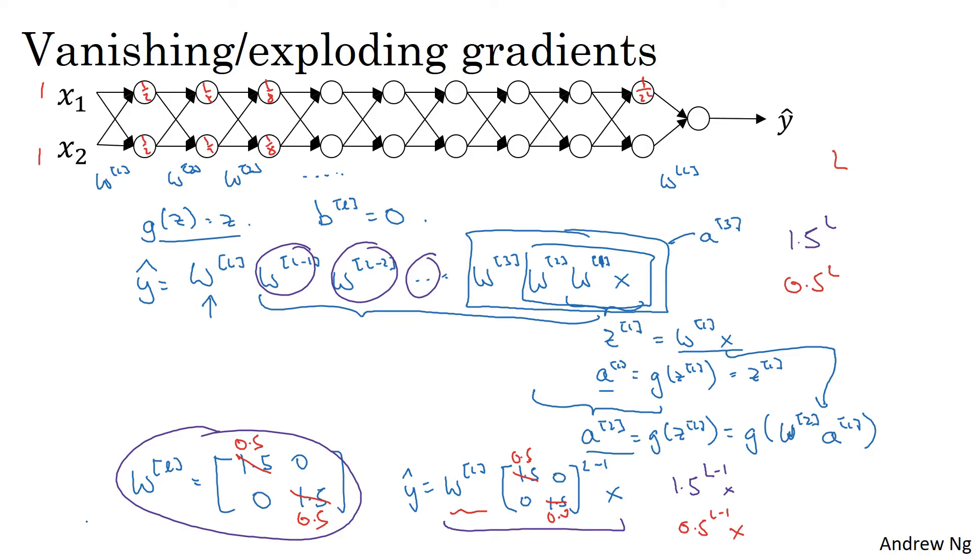So the intuition I hope you can take away from this is that if the weights W are all just a little bit bigger than 1, or just a little bit bigger than the identity matrix, then with a very deep network, the activations can explode. And if W is just a little bit less than identity, so if this was maybe 0.9, 0.9, then in a very deep network, the activations will decrease exponentially.